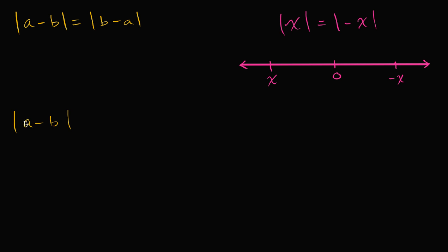So let me start with the absolute value of A minus B. Now A — I don't want to say it's positive or negative, A could be a negative number — but we can rewrite A as being the same thing as negative negative A. So this becomes the absolute value of negative negative A minus B. The negative of a negative is going to be a positive, so this is still positive A. I haven't changed this in any dramatic way.